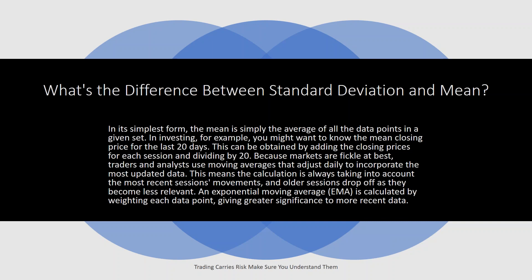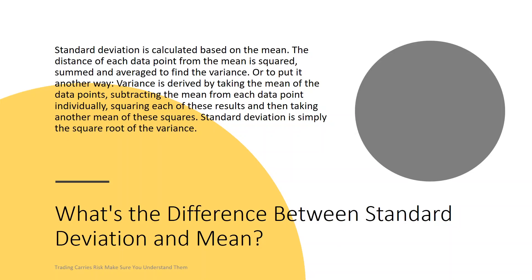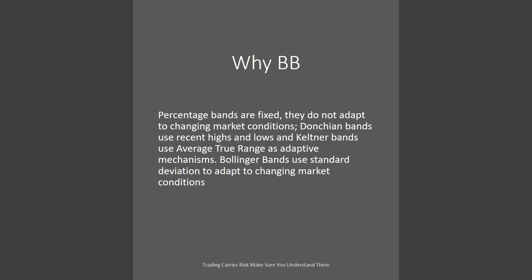Because markets are fickle, traders and analysts use moving averages to adjust daily to incorporate the most updated data. The calculator is always taking into account the most recent session's movement while older sessions drop off as they become less relevant. Standard deviation is calculated based on the mean — the distance from each data point from the mean is squared, summed, and then averaged to find its variance. Variance is derived by taking the mean of the data points, subtracting the mean from each data point individually, squaring each result, and taking another mean of these squares. Standard deviation is simply the square root of the variance — but we don't need to know all that; let's go look at charts.